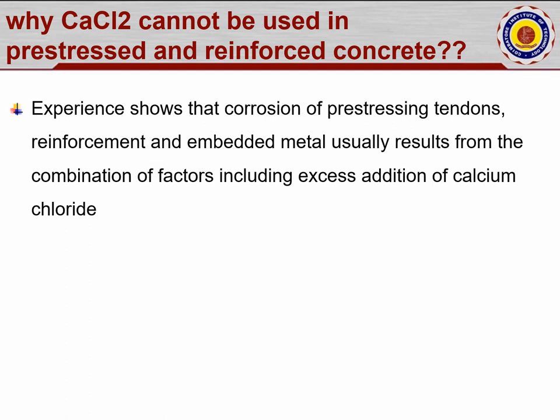Experience shows that corrosion of prestressing tendons, reinforcement, and embedded metal usually results from a combination of factors including excess addition of calcium chloride, which leads to corrosion in the early stages. This is why calcium chloride cannot be used in prestressed concrete.